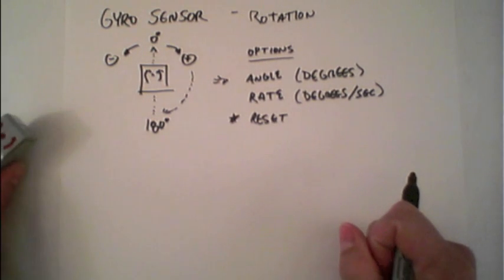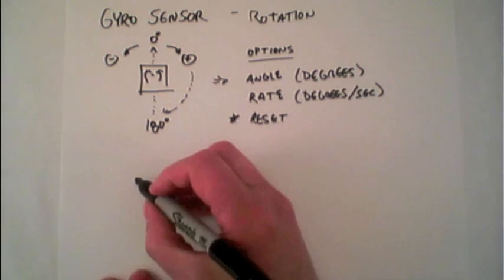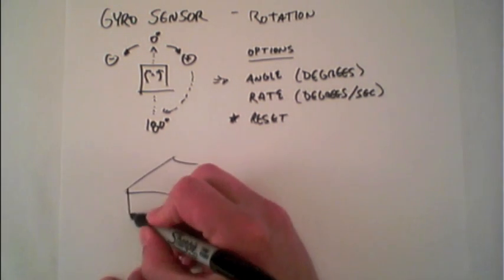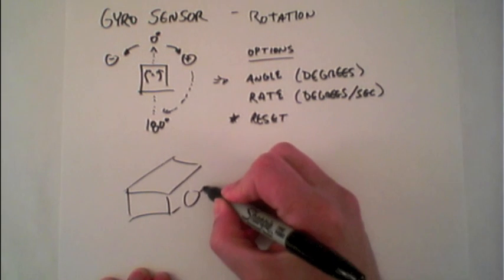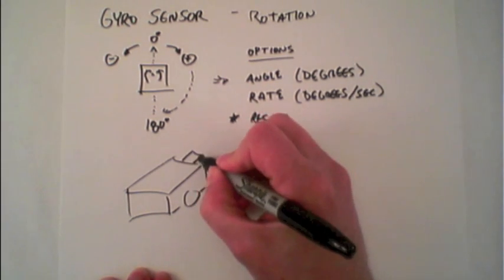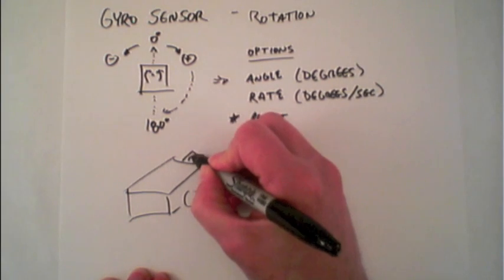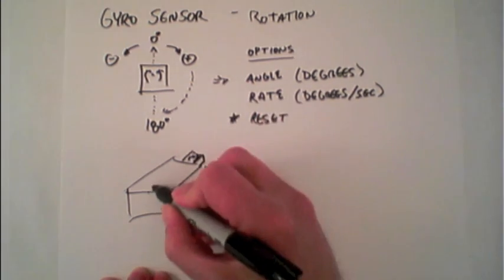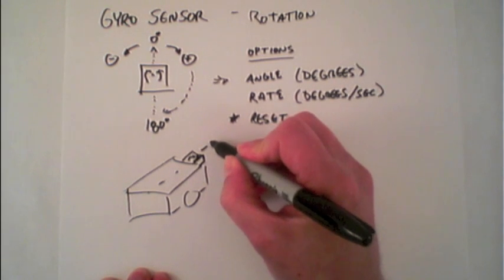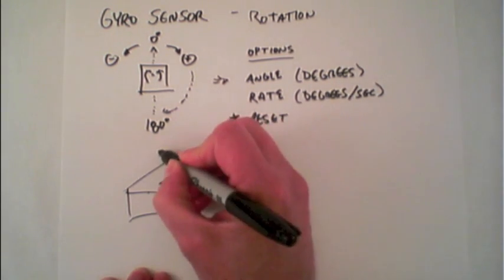Typical ways that the gyro sensor is used are on robots, for instance, to figure out exactly when you're turning 90 degrees. So thinking about putting it on the top here and turning side to side.